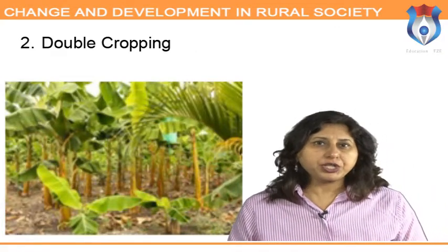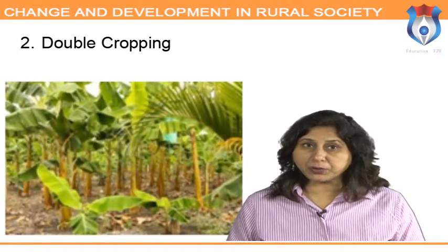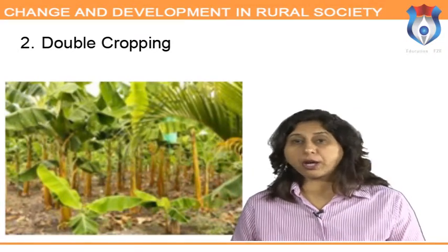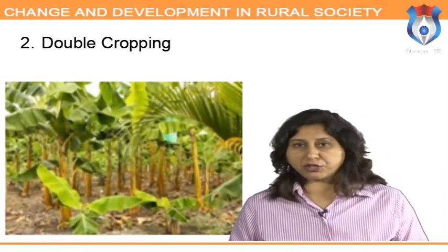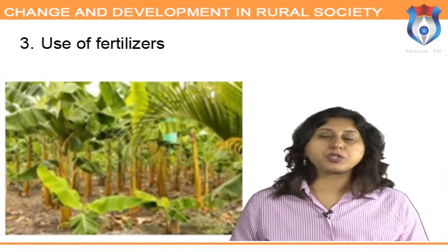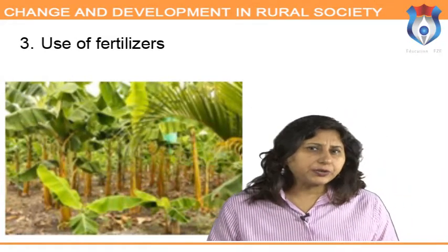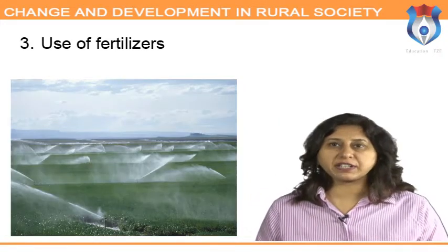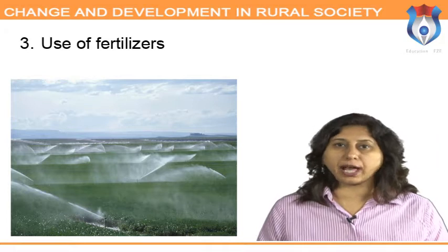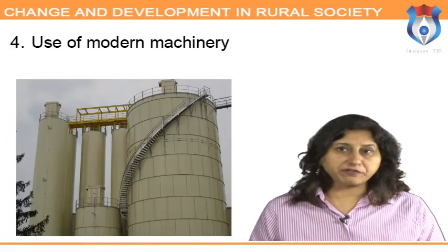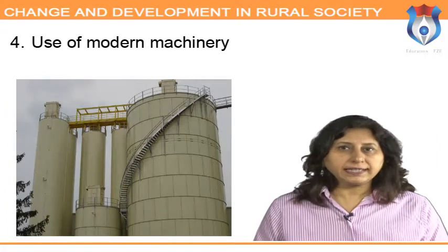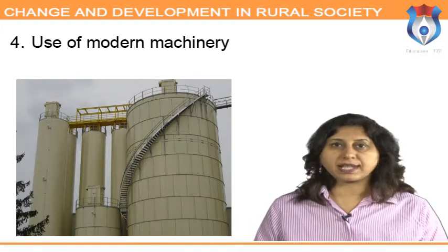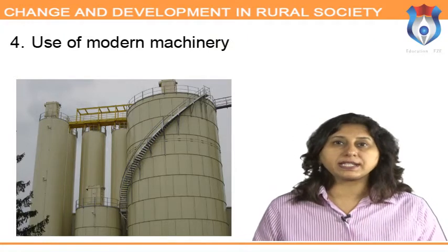Double cropping: due to the early maturity of new seeds, it became possible to grow two or three crops in a year from the same piece of land. Use of fertilizers: increased use of fertilizers also contributed to a significant increase in agricultural output.